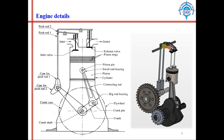This mechanism here is the valve operating mechanism — it controls how these valves open and close automatically based on the position of the piston. A gear element is shown here: on the crankshaft a smaller gear is mounted, meshed with another gear connected to the camshaft. On the camshaft, two cams are present, which are in contact with vertical rods called push rods, and these push rods are connected to the valves through a lever mechanism.